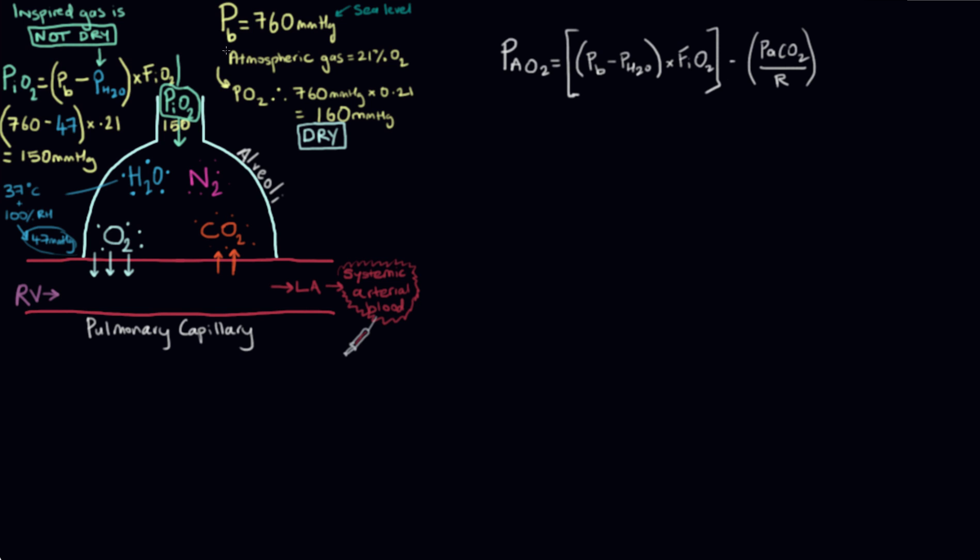We know that atmospheric pressure at sea level is 760 millimeters of mercury, and gases in a gas mixture will exert a partial pressure based on the composition of that gas and what percentage is made up by the gas that we're talking about.